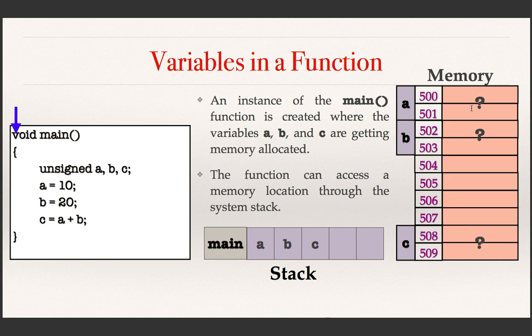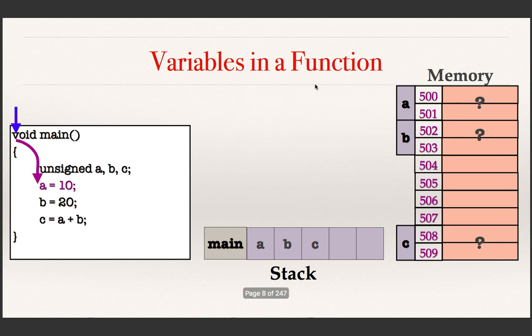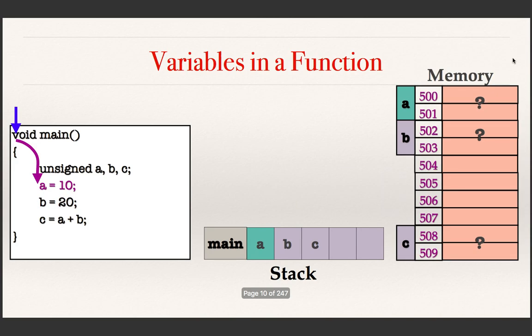Now let us see how the execution progresses. First, the control comes to the executable statement a = 10. That is, the value 10 needs to be assigned into the variable a. Where is a allocated? It is in memory. So the system goes to the memory through the stack, goes and finds the location, and stores the value 10 in that location.